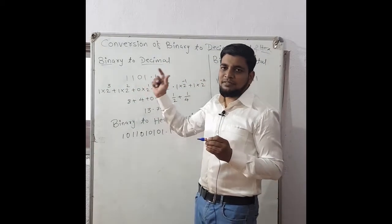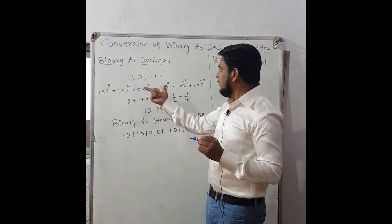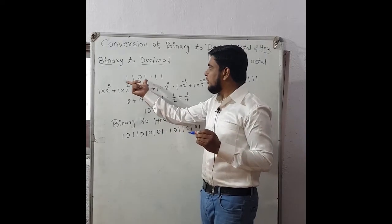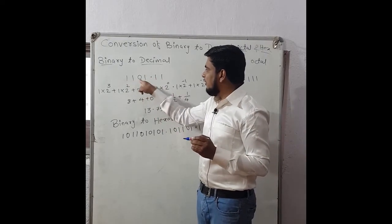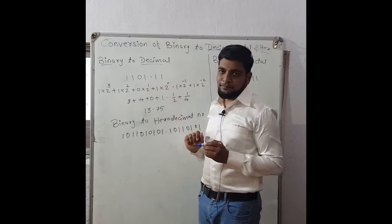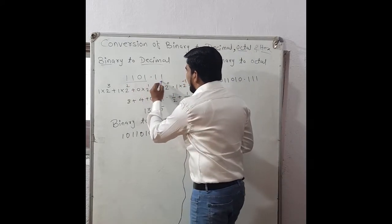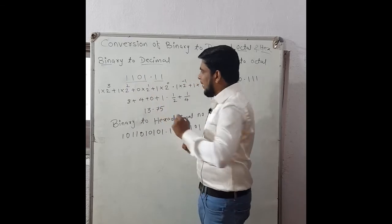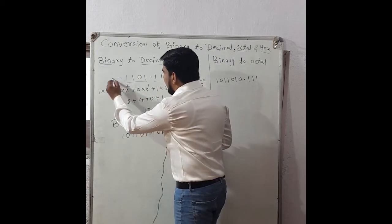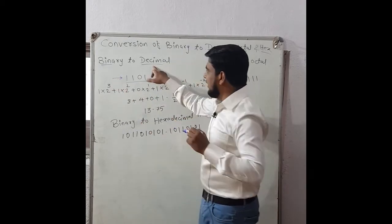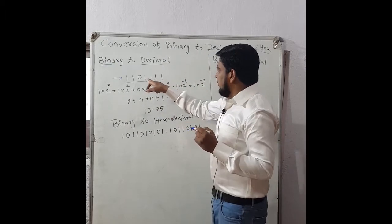There are two methods. The first method: suppose a binary is given with a fraction as 1 1 0 1 point 1 1. This is the binary number 1101.11 and we have to convert this binary into its decimal equivalent.